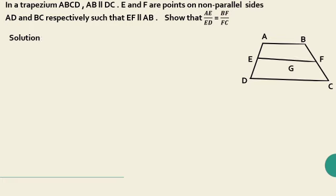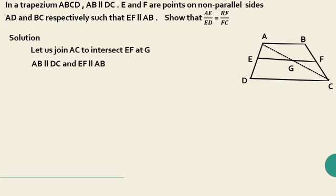Solution: Let us join AC to intersect EF at G. Given that AB is parallel to DC and EF is parallel to AB.